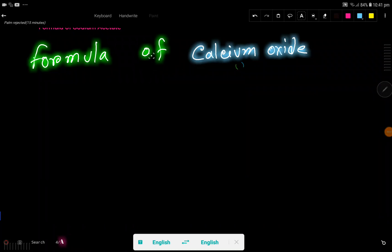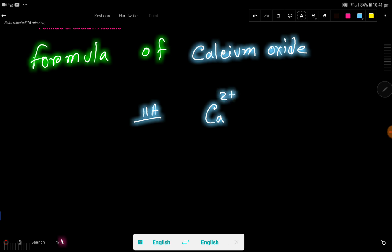Formula of calcium oxide, or how to write the formula of calcium oxide. You know that this is the symbol of calcium. Calcium is an element of group 2A, that's why it will release two electrons. That is, it will have a positive charge of 2+.